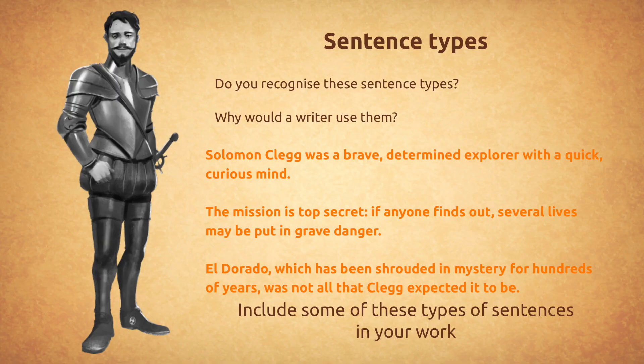Let's have a little recap of some lovely sentence types. Do you recognise any of these? Why do you think a writer would choose to use them? Solomon Clegg was a brave, determined explorer with a quick, curious mind. The mission is top secret. If anyone finds out, several lives may be put in grave danger. El Dorado, which has been shrouded in mystery for hundreds of years, was not all that Clegg expected it to be.